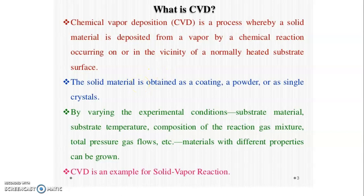By varying the experimental conditions — substrate material, substrate temperature, composition of the reaction gas mixture, total pressure, gas flow, etc. — materials with different properties can be grown. Chemical vapor deposition is an example of a solid-vapor reaction.